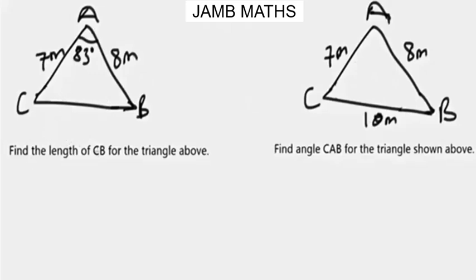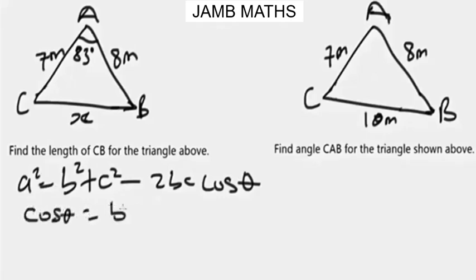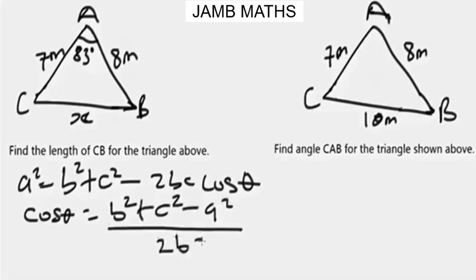We have here the first question: find the length of CB for the triangle shown. That means we apply the cosine rule. The cosine rule is: a² = b² + c² − 2bc·cosθ. Another form of this cosine rule is: cosθ = (b² + c² − a²) / 2bc. Either formula will work.